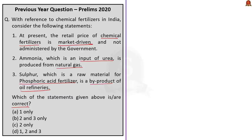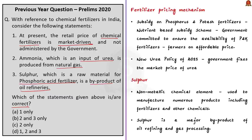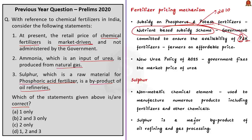Consider Statement 1: the retail price of chemical fertilizer is market-driven. The Government of India subsidizes fertilizers to ensure they are easily available to farmers. The subsidy on phosphorus and potassium fertilizers is governed by the Nutrient-Based Subsidy Scheme effective from April 1, 2010. The government also fixes the market price of urea as per the New Urea Policy of 2015. Thus, Statement 1 — that the retail price is market-driven and not administered by the government — is wrong.